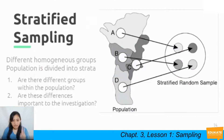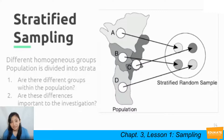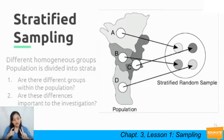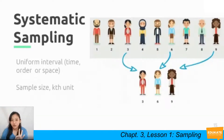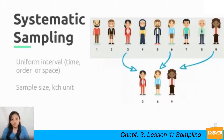The second probability sampling method is stratified sampling, where the population is divided into strata. To determine if you should use stratified sampling, ask: Are there different groups within the population? And are these differences important to the investigation? Third is systematic sampling, which uses a uniform interval — by time, order, or space. In the sample, you select every kth unit; for example, every third unit.